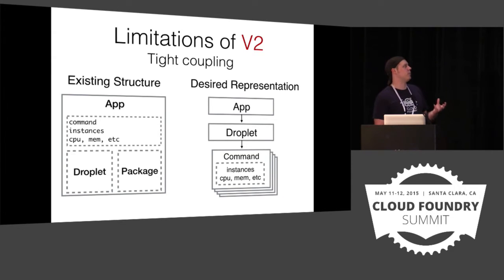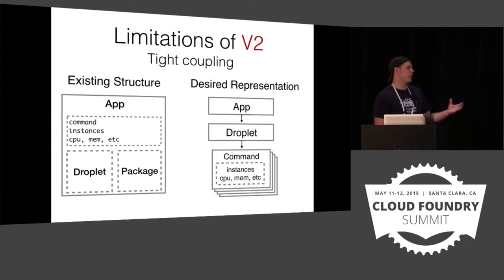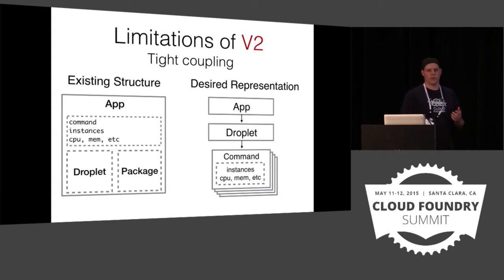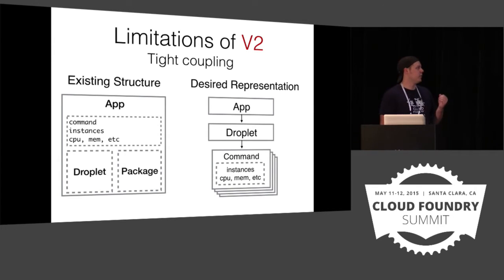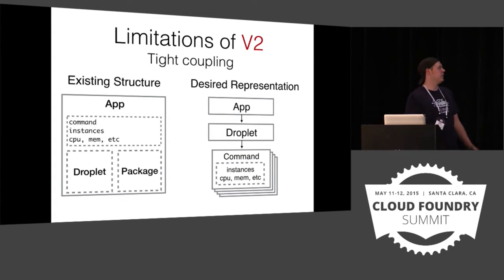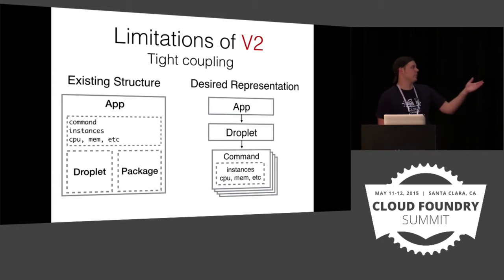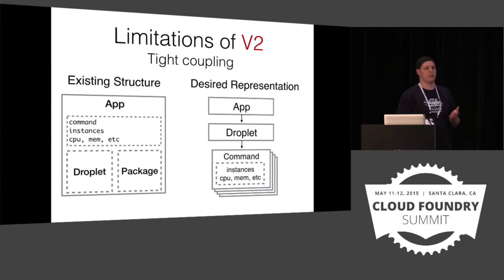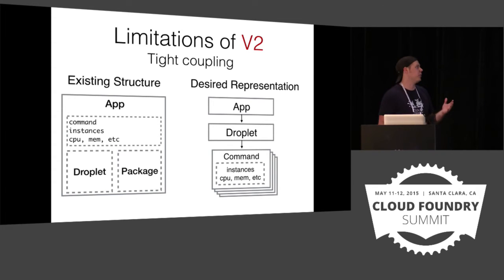Part of that is this tight coupling we have in today's app, where the one app object is our droplet, it is our package, it is our command. So when we talk about wanting separate start commands like those from a process file, we don't really have a place to put multiple start commands. The only thing we have is to add more apps, and doing that means you get a copy of your droplet and your package — which is anti the goal of a proc file. We want to push a thing once.